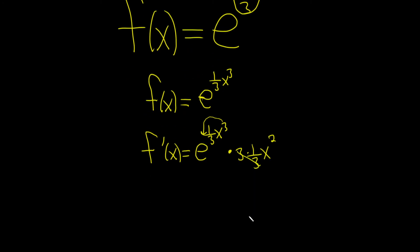So we end up with, let's see, f prime of x equals, I guess we can put the x squared in the front. So x squared, e to the one-third, x cubed. And that would be the final answer.